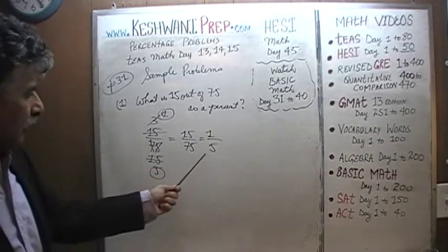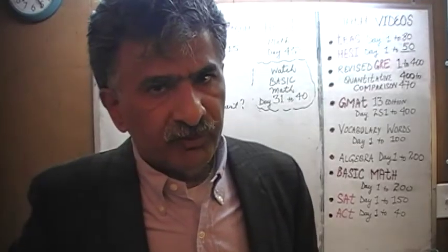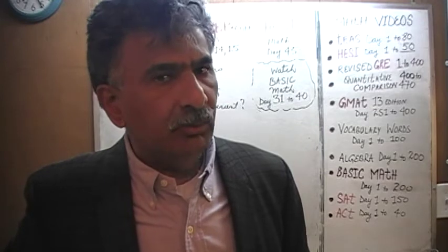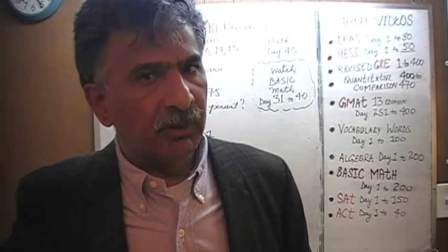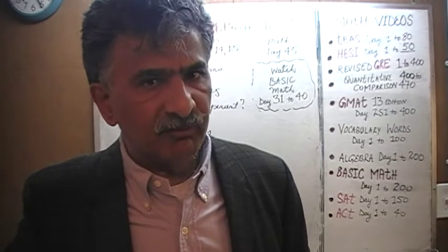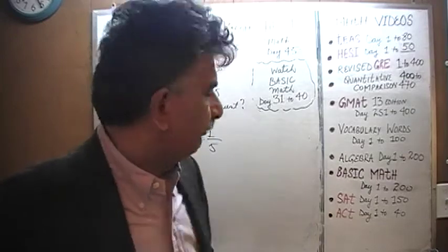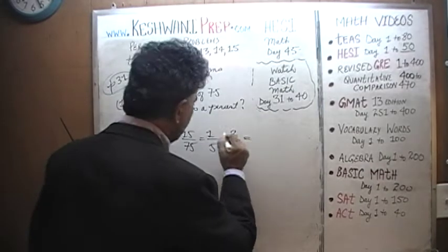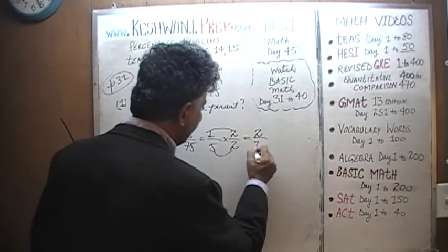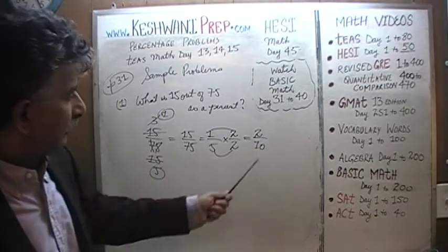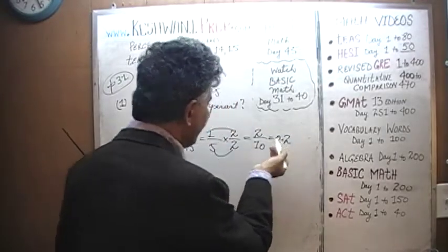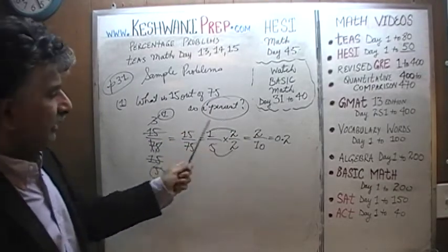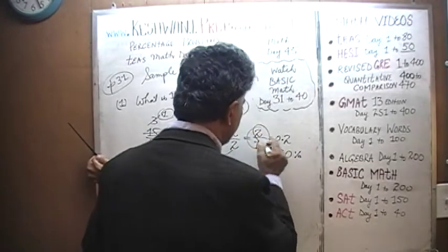You have to know your fifths for this exam — your fifths, tenths, quarters, eighths, and thirds. If you don't remember what 1/5 equals as a percentage, it's simple: multiply top and bottom by 2, giving you 2 over 10. Two tenths is 0.2, but they are asking for a percentage, not a decimal. So 0.2 is 20%. The answer is 20%.